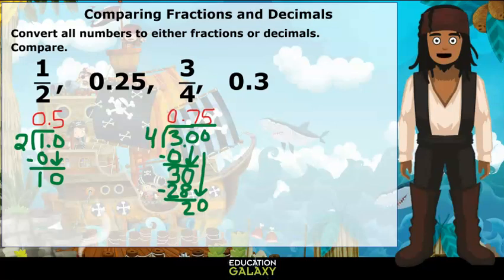Now let's order them. Each of our numbers have zero wholes, so let's look at the tenths place. 25 hundredths has the smallest number of tenths, so it would go first, followed by the 3 tenths, then the 1 half, and then 3 fourths.